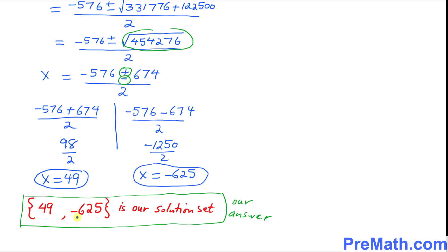Thus, 49 and negative 625 is our solution set. And that is our answer.